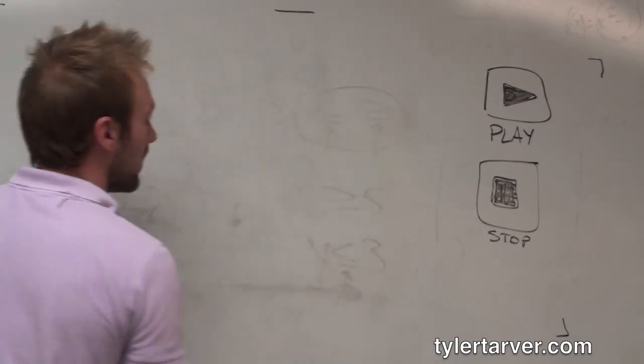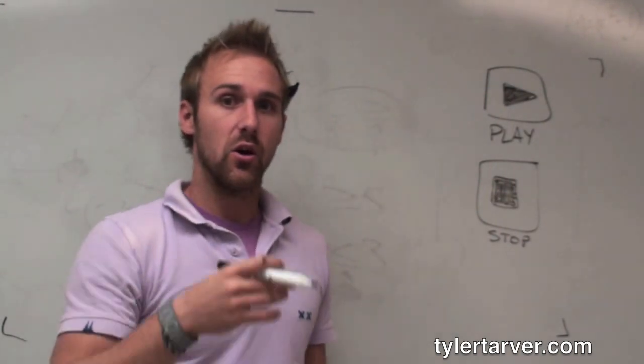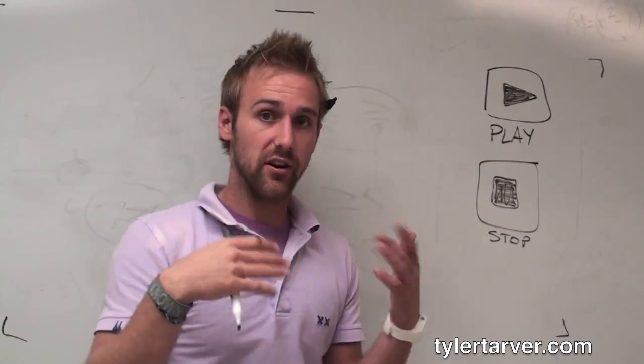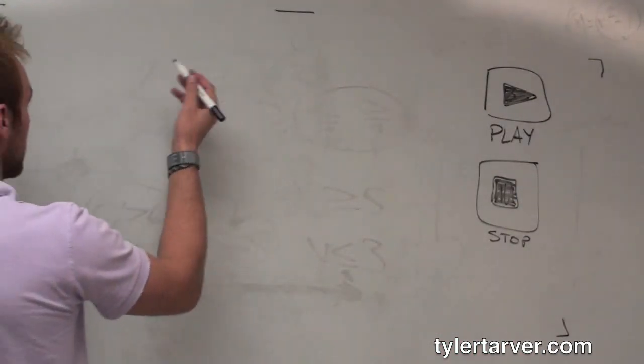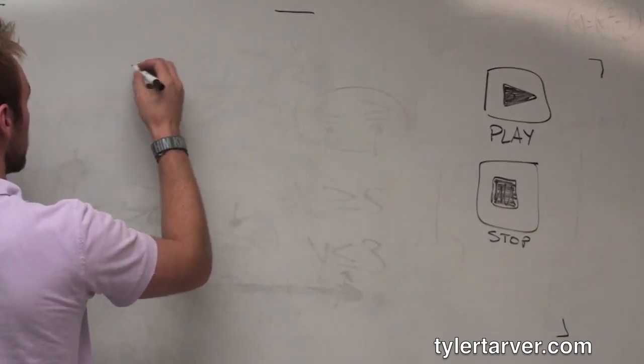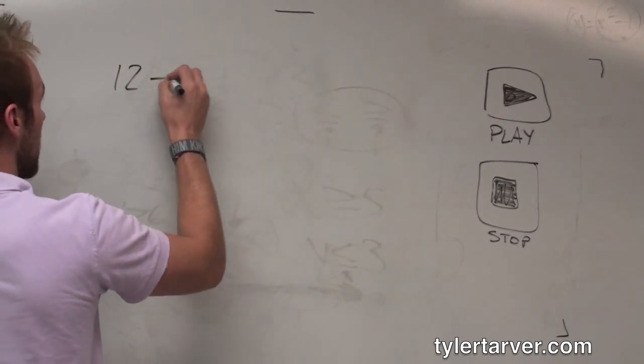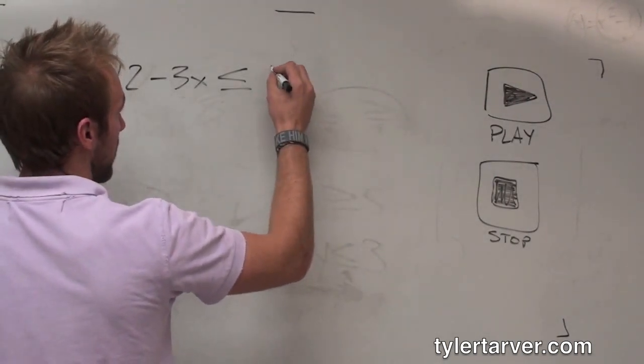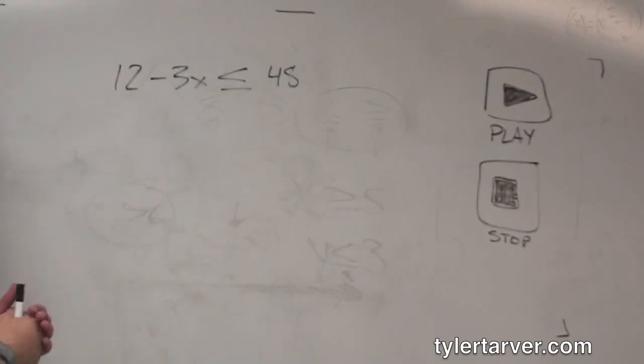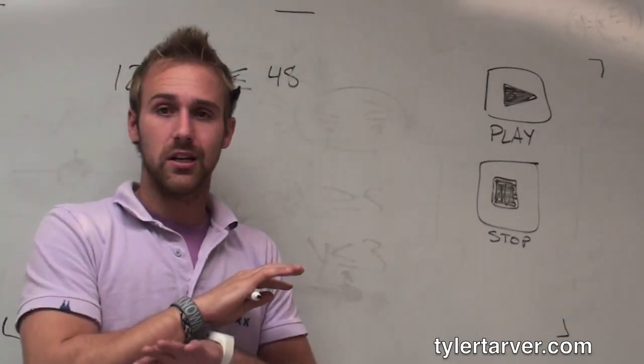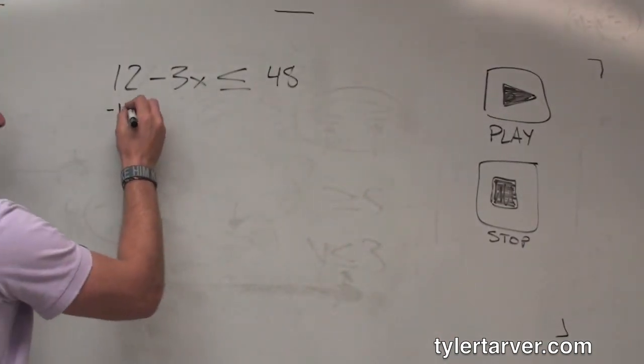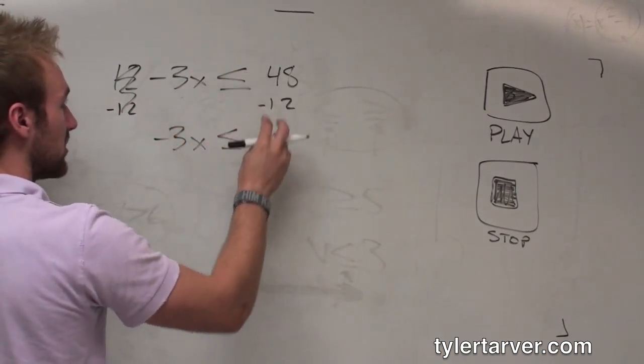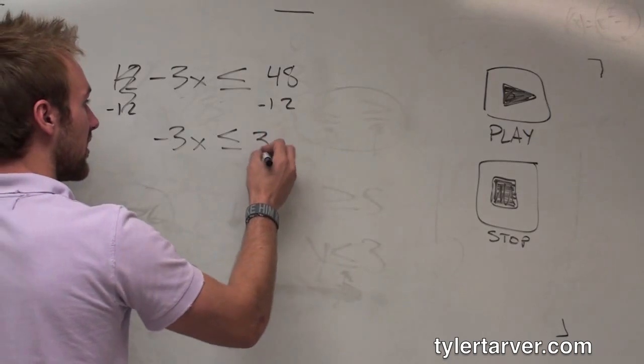Now, let's say you want to do, I told you earlier, I said there's only one difference between solving an equation whenever it's an equality with an equal sign and an inequality where it's got like greater than or less than or greater than or equal to or less than or equal to. Only one difference. We're about to learn that. Let's say we've got 12 minus 3X is less than or equal to 48. Now, I want to start off. I want to solve it just like it's a regular equation. I would get rid of my 12 first, subtract 12 from both sides, cancel down here, bring down the negative 3X is less than or equal to 48 minus 12 is 36.